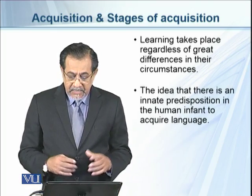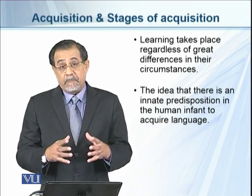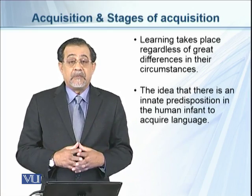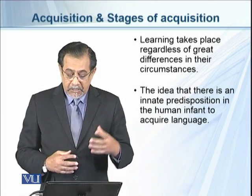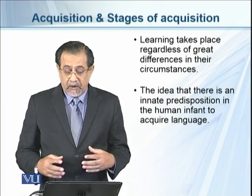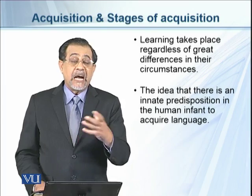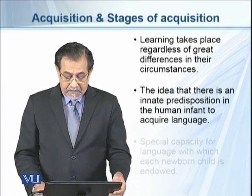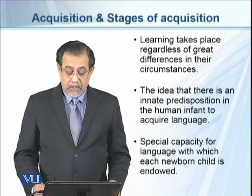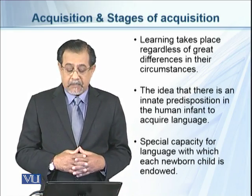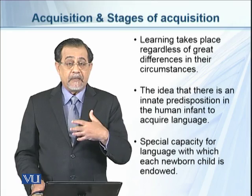This universality gives rise to the idea that there is an innate predisposition in the human infant to acquire language. The fact that children learn language in the same way across different circumstances points to an innate, hardwired capacity in our brains — a social capacity for language with which each newborn child is endowed, tied to the culture and society into which they are born.